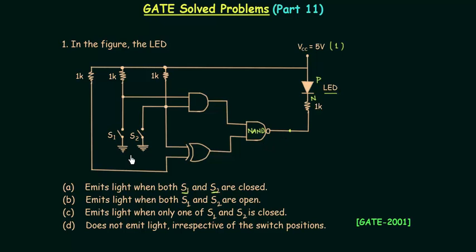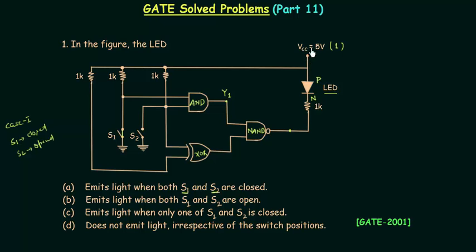The output of the NAND gate depends on the positions of S1 and S2. We have one AND gate and one XOR gate in this circuit. First we will find the output of the AND gate — let's call it Y1. Both inputs are connected to VCC but depend on S1 and S2. In Case 1, when S1 is closed and S2 is open: S1 closed means 5V is connected to ground, so the first input equals 0. S2 is open so 5V is not grounded, giving a second input of 1. Therefore Y1 = 0.